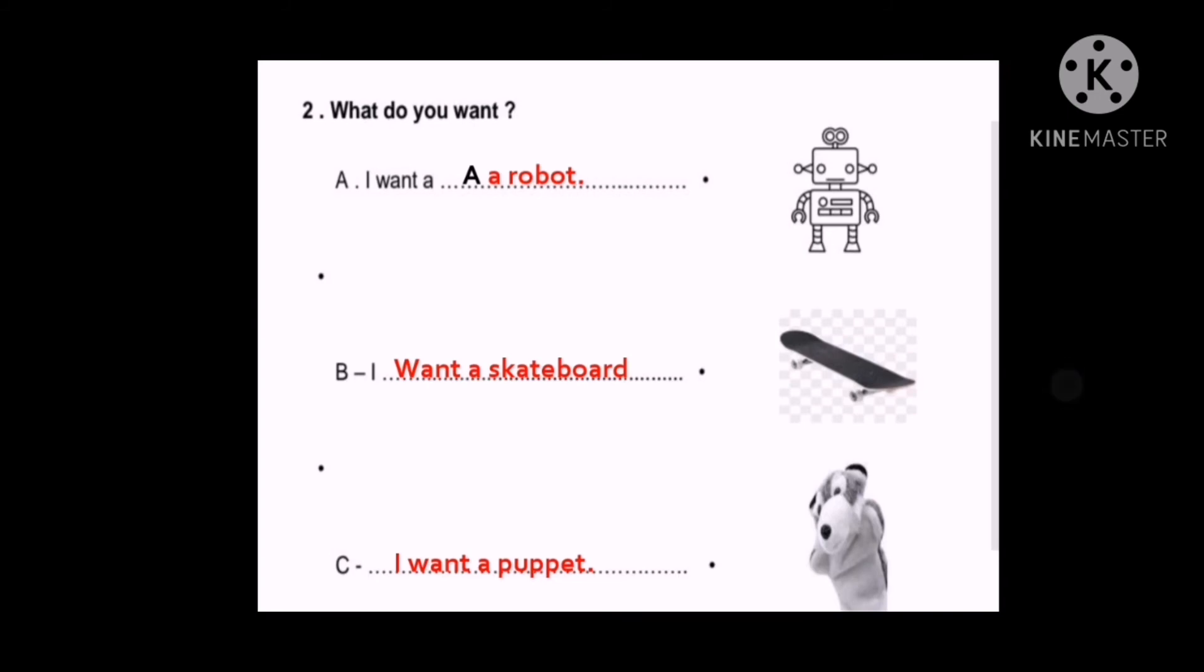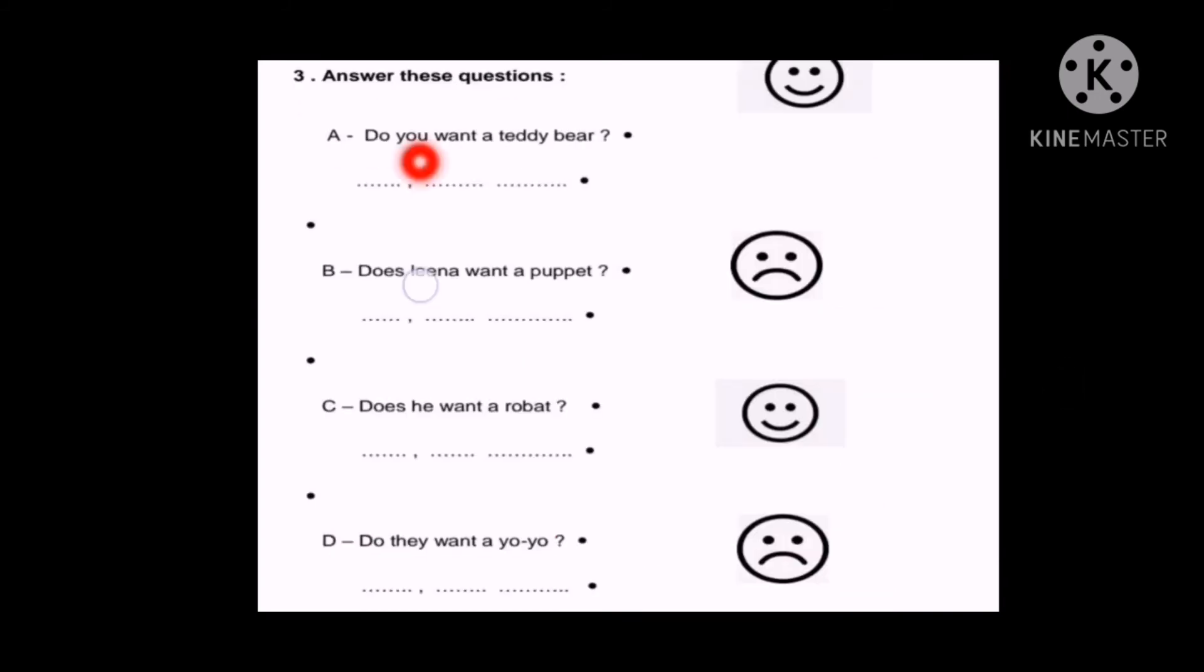Now let's move on to the last exercise. Answer these questions. So here we have questions A, B, C and D. We should answer them. How to answer them? Based on these faces. If we have a happy face, then our answer will be yes. If I have a sad face, my answer is no. Perfect.